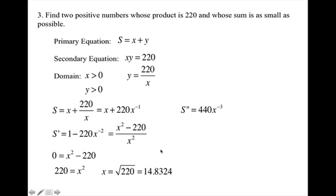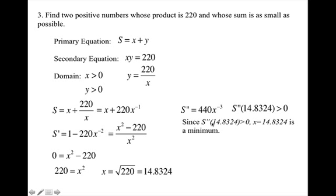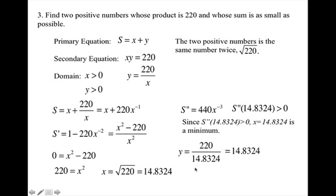I use the second derivative test to confirm this value gives a minimum — plugging in gives a positive value, confirming x is a minimum. Finding the y value by plugging x equals the square root of 220 back in gives the same value. So the two positive numbers are both equal to the square root of 220.